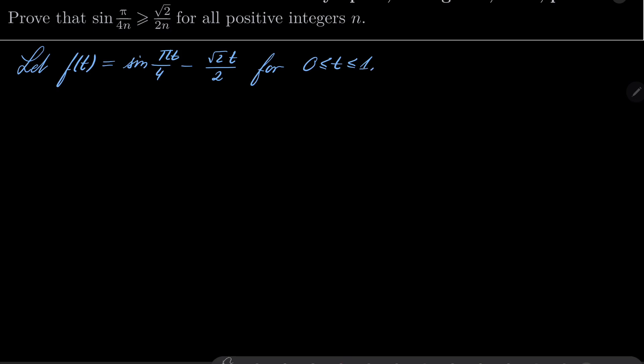f'(t) is (π/4)cos(πt/4) - √2/2 for 0 ≤ t ≤ 1.